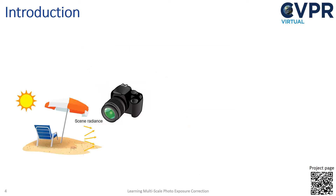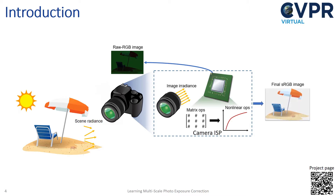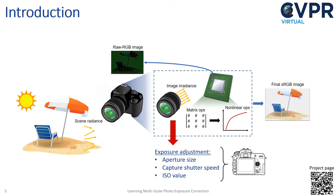To understand exposure errors, we need to examine how cameras work. The incoming scene radiance hits the camera sensor to produce a raw RGB image. This raw image is processed by the camera's ISP to produce the final standard RGB image. Exposure affects the raw image in a linear manner and is controlled by the camera's aperture, shutter speed, and ISO or gain value. These are typically controlled by the camera's auto exposure algorithm.